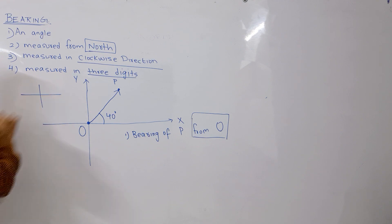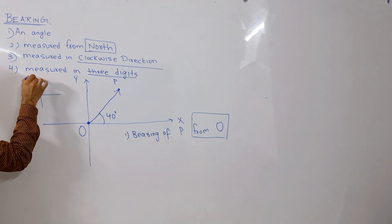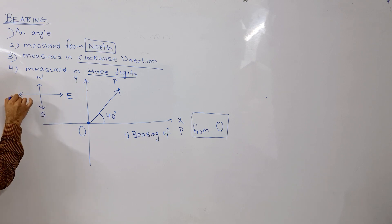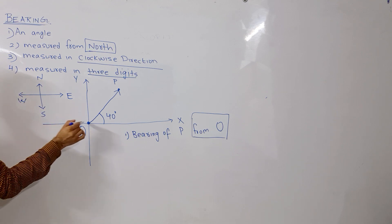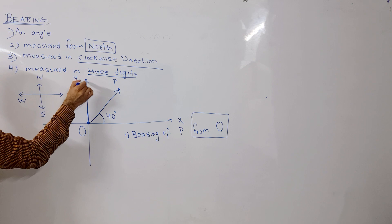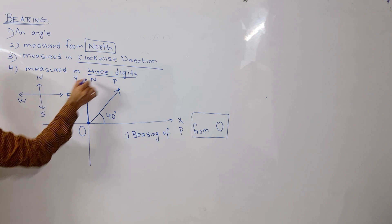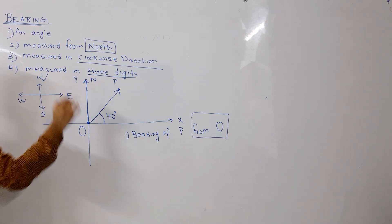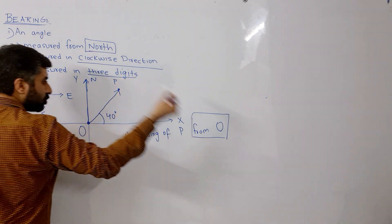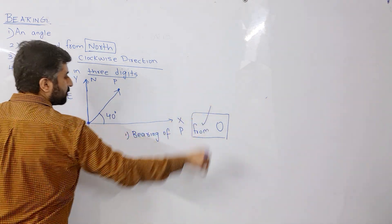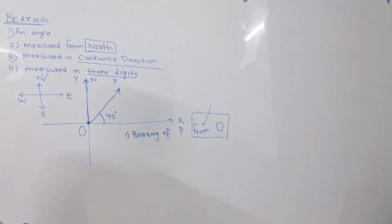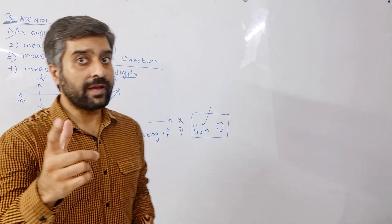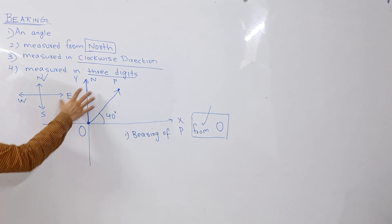So I am going to O. Let us draw the directions. This is north, this is east, this is south, this is west. So this one is north, as you can see here. The first thing is to draw north, and you will know where from the word 'from' — if it says from O, draw your north at O. So the north has been plotted — step number one done.